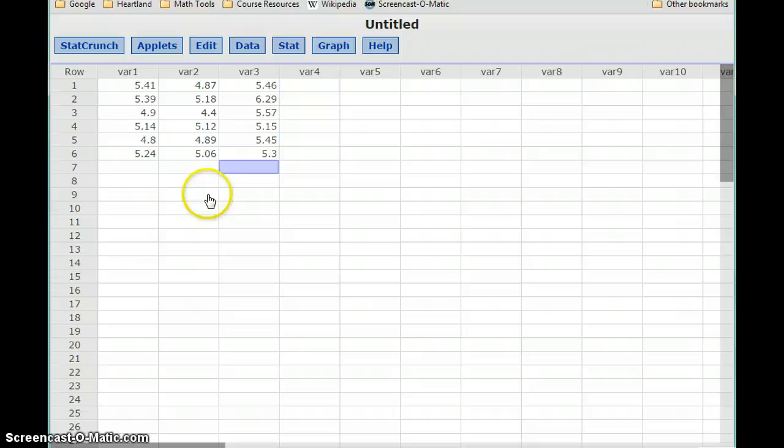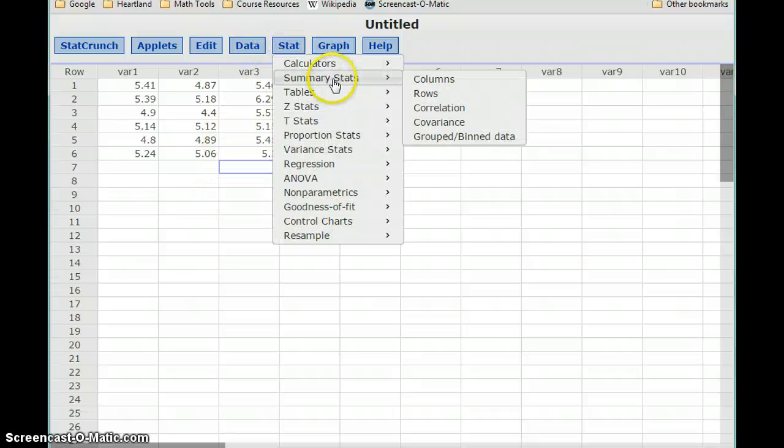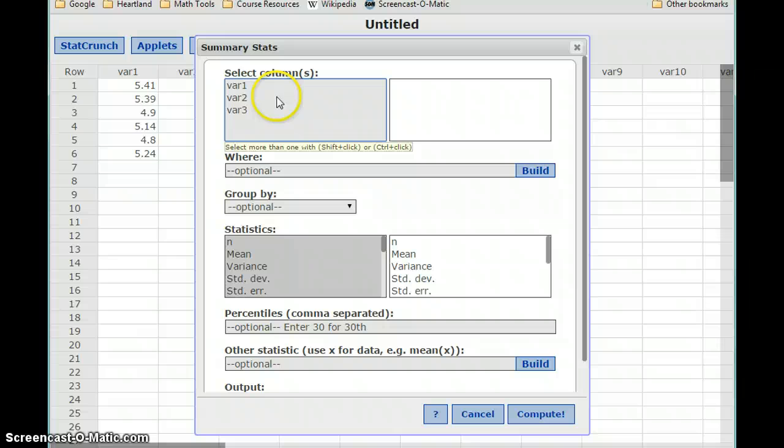To do that, with our data already typed into StatCrunch, we'll select stat, summary stats, and then columns. We'll select variables 1 through 3.